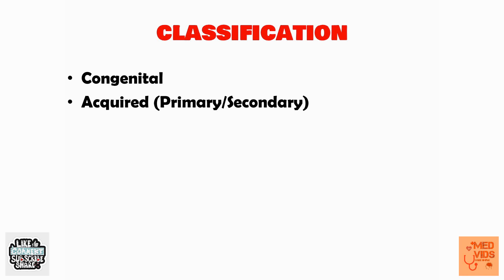Wittmaack theory explains primary acquired cholesteatoma, based on retraction pocket formation. Secondary acquired cholesteatoma occurs when there is already a pre-existing perforation or discharge, and cholesteatoma develops secondary to another factor. Habermann theory explains secondary acquired cholesteatoma — because of a pre-existing hole in the tympanic membrane, epithelium from the external auditory canal invades through the perforation and causes cholesteatoma.